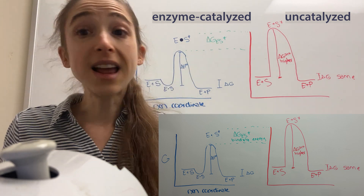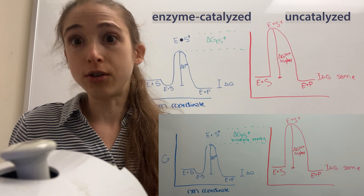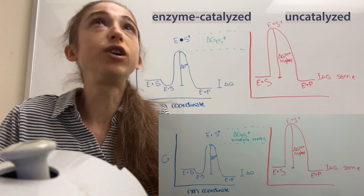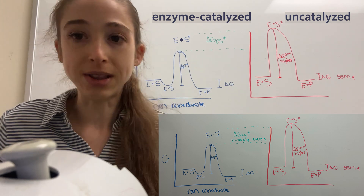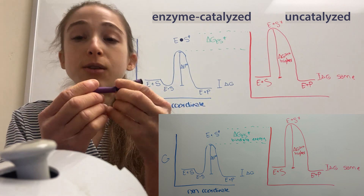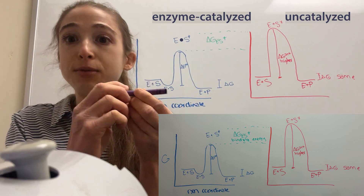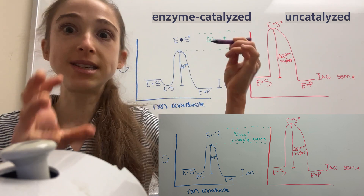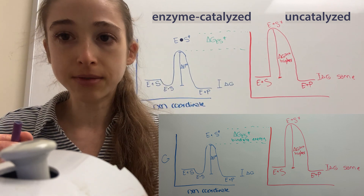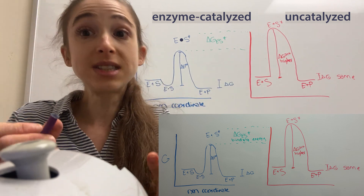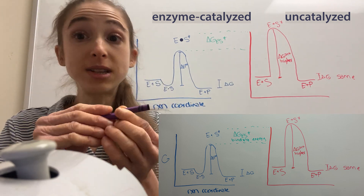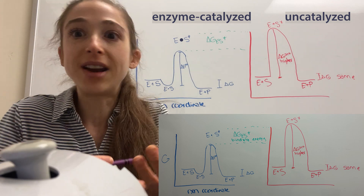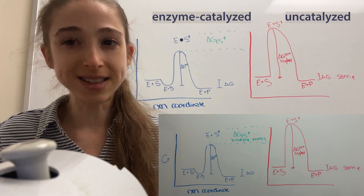An enzyme can't make anything happen that couldn't actually happen — it would just be really, really unlikely without an enzyme. Theoretically, if we wait long enough and have enough energy, all the random stuff comes together and the crayon snaps in half. That would still go through a transition state, but now it wouldn't have an enzyme helping things out.